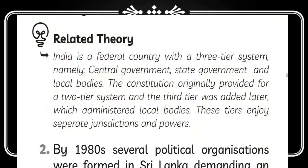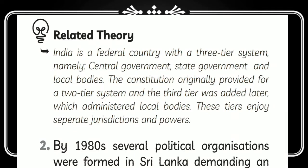India is a federal country with a three-tier system namely central, state, and local bodies. The constitution originally provided a two-tier system and the third was added later after decentralization, which administers local bodies. These tiers enjoy separate jurisdictions and powers.